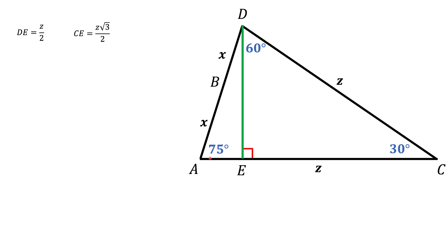The next thing you would like to do is to find this segment AE. And that equals to AC, which is z, minus CE, which we just found.